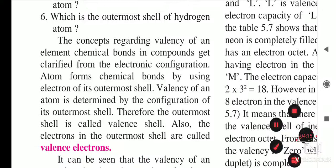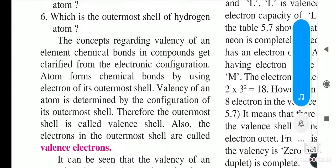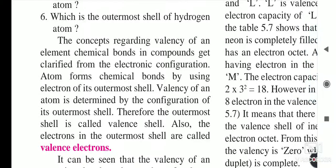Now the concept regarding valency of an element: chemical bonds in compounds get clarified from the electronic configuration. Once you understand electronic configuration — the capacity of each shell, K is first, L is second, M is third, N is fourth, with capacities 2, 8, 18, and 32 respectively — it will be easy to understand the concept of valency.